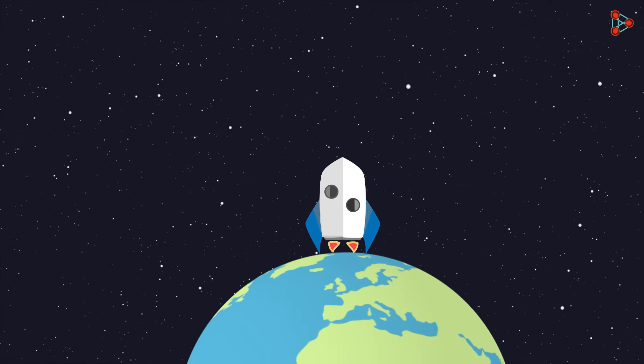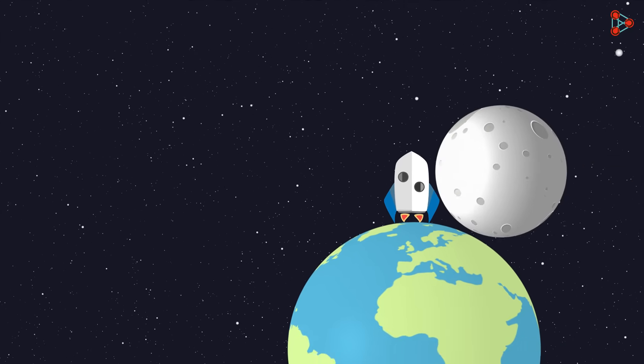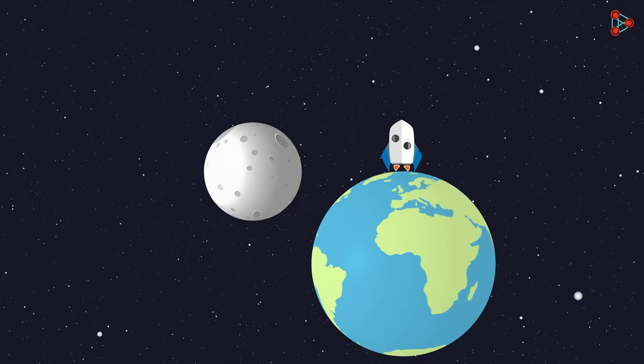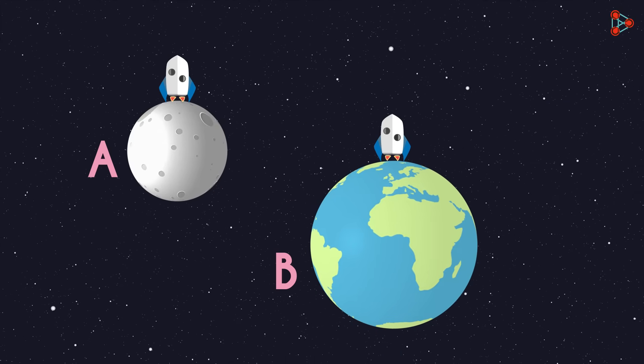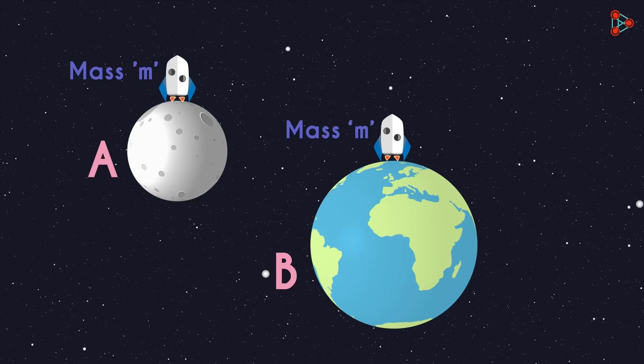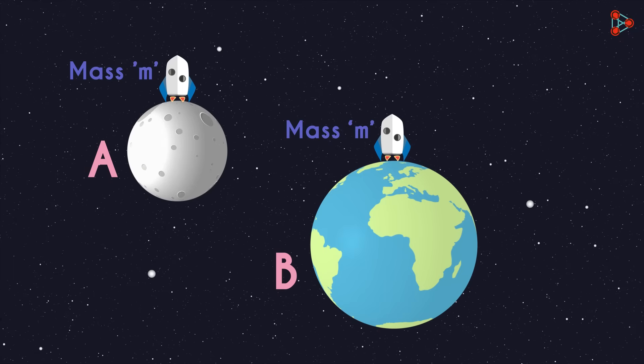Let's understand this using a simple example. Say there are two places, place A and place B and there is an object of mass M. In place A, the pull of gravity is x units.